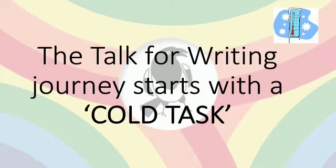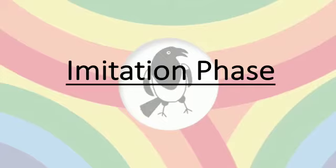There is no teaching involved in this aspect of the Talk for Writing learning journey and it really is just the children showing what they can do. Once the outcomes of the cold task have been established, the Talk for Writing learning journey then begins with the imitation phase. I'm now going to talk you through some of the activities your children will do during that phase.